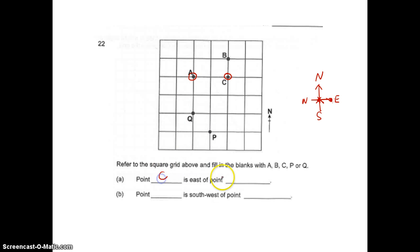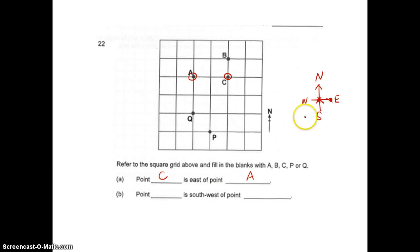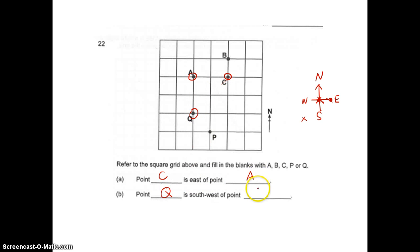Next I want to identify southwest. Southwest would be here. Southwest is at 45 degrees between south and west. I know that point Q is southwest of point C.